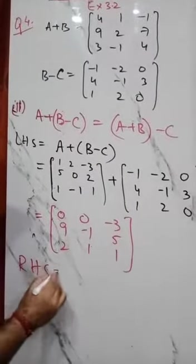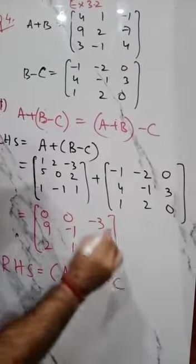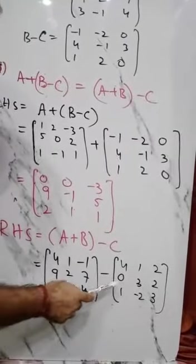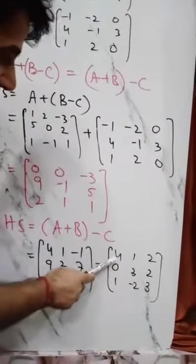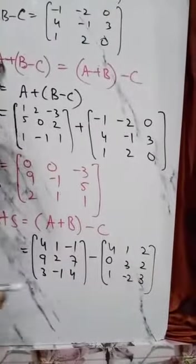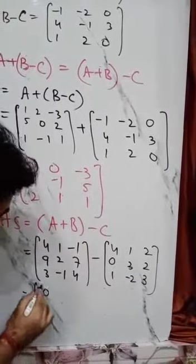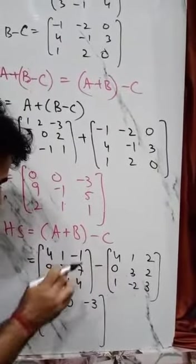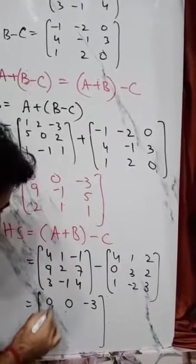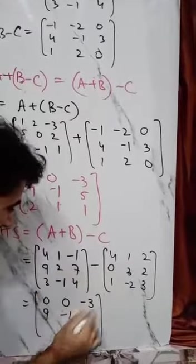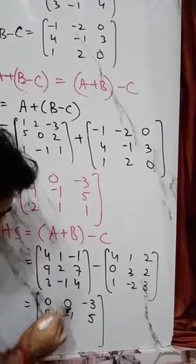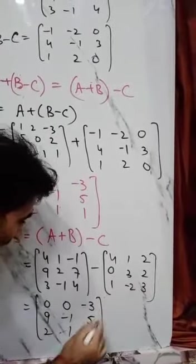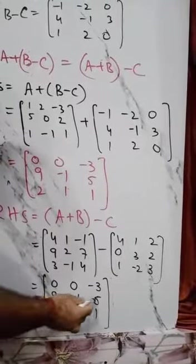Now RHS is A plus B minus C. Matrix A plus B we already computed as 4, 1, minus 1; 9, 2, 7; 3, minus 1, 4. Subtract matrix C which is 4, 1, 2; 0, 3, 2; 1, minus 2, 3. So: 4 minus 4 is 0, 1 minus 1 is 0, minus 1 minus 2 is minus 3. Second row: 9 minus 0 is 9, 2 minus 3 is minus 1, 7 minus 2 is 5. Third row: 3 minus 1 is 2, minus 1 minus minus 2 is 1, 4 minus 3 is 1. So RHS equals: 0, 0, minus 3; 9, minus 1, 5; 2, 1, 1.